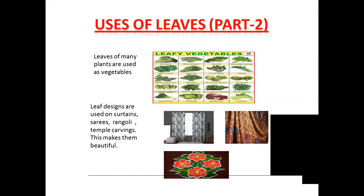Here we have so many examples — fenugreek, spinach, cabbage, curry leaves. So many leaves are there. All these leaves are used as vegetables for us. So leaves of many plants are used as vegetables.